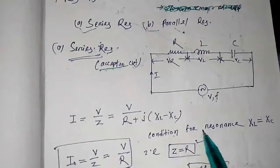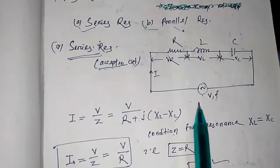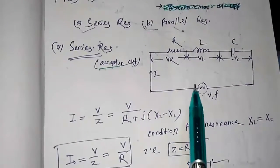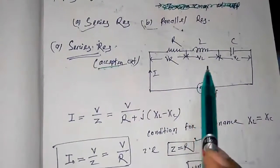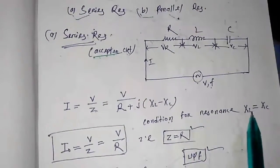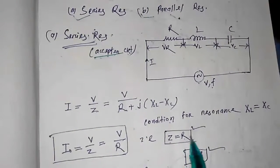Condition for resonance: for resonance, the impedance should be minimum. That means the reactance will be zero. Condition for resonance is XL must be equal to XC. That is, Z equal to R.